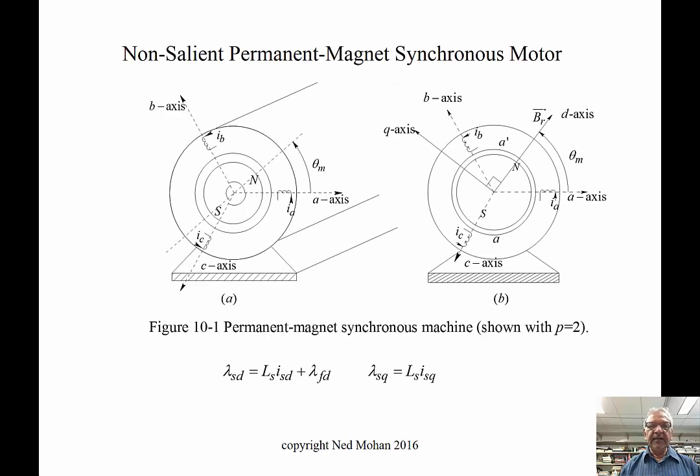Looking at the cross-sectional view of a two-pole machine, we see a north and south pole on the rotor and three-phase winding on the stator. This pole pair produces a sinusoidal flux density distribution that reaches the stator windings, represented by the BR space vector, and the D-axis is always aligned with this BR space vector. The Q-axis is at 90 degrees.